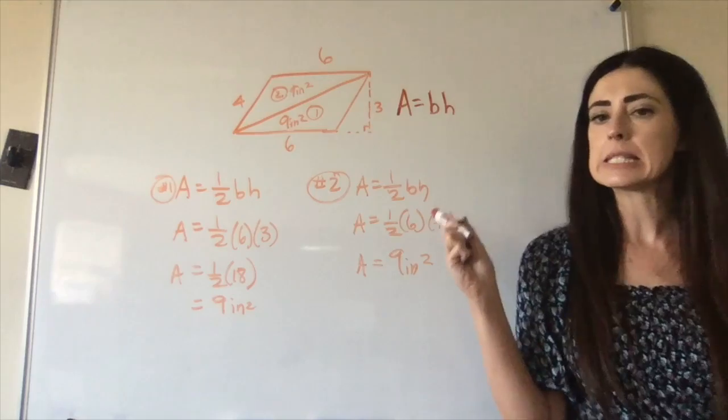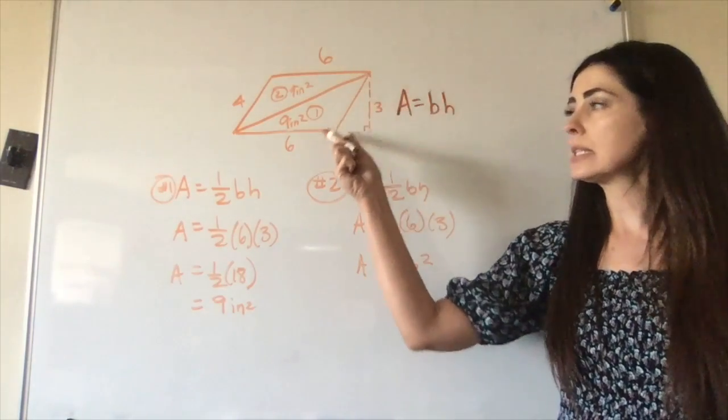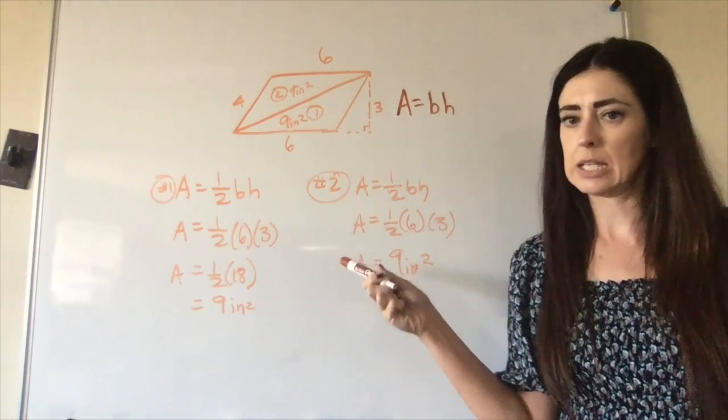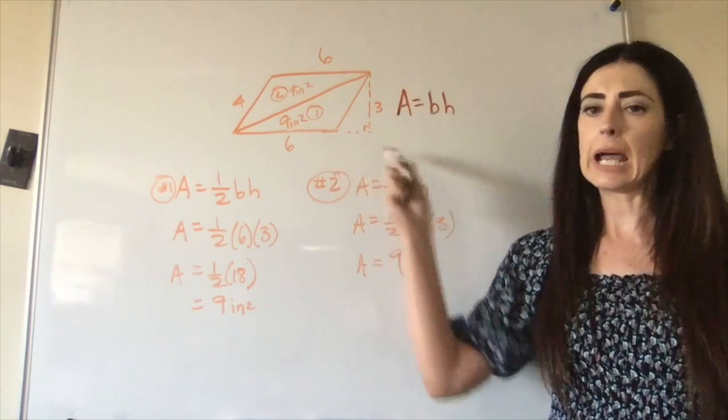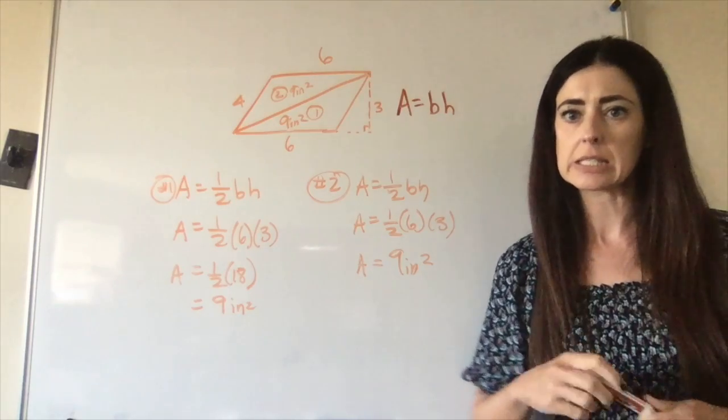And the reason they call it height instead of length and width, base and height, is because this is angular, the height is different than the width or the length. So just remember that height has to be taken at a 90-degree angle, and so that's why we say height instead of length and width.